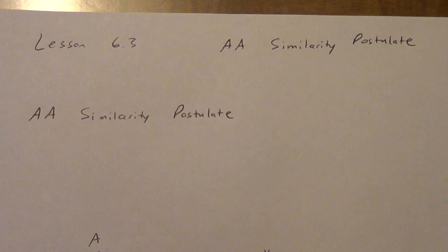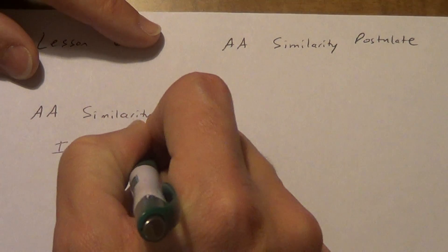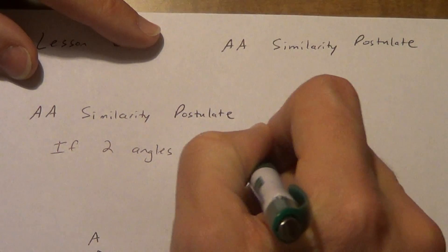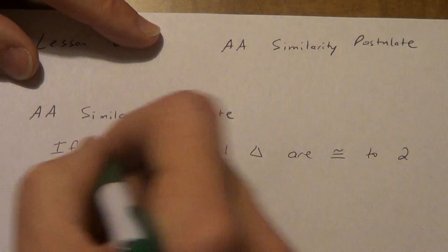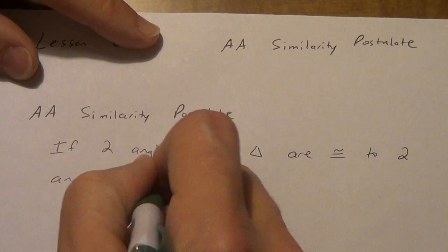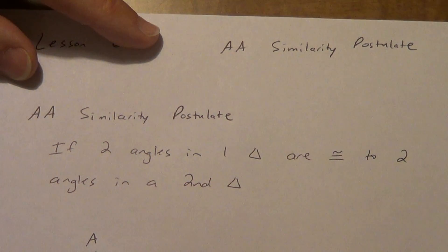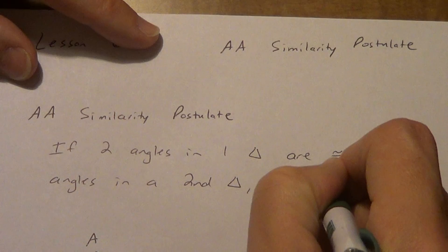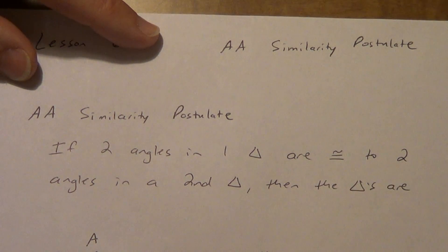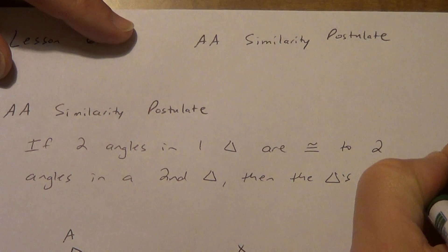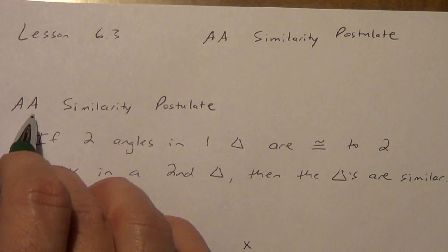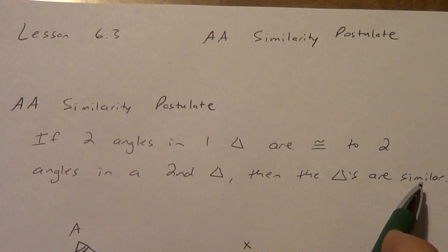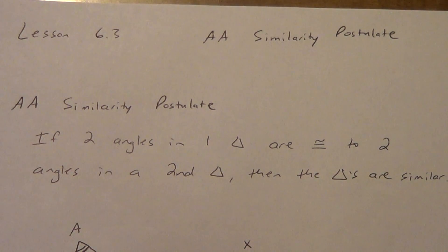The angle-angle similarity postulate says: if two angles in one triangle are congruent to two angles in a second triangle, then the triangles are similar. Angle-angle — so I only need two, I don't need three. We're talking about similar triangles. It's a postulate, not a theorem. It's one of these things we can't prove, but it definitely makes sense if we think through it.